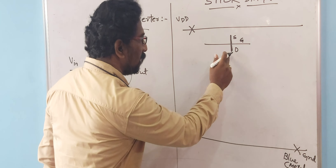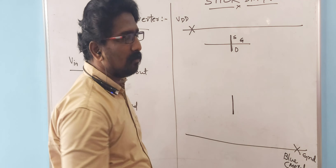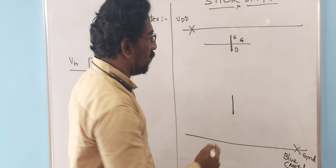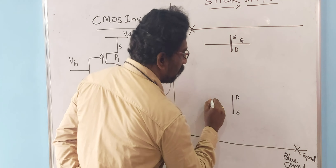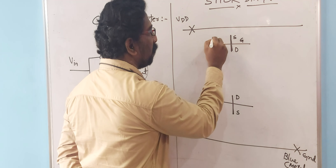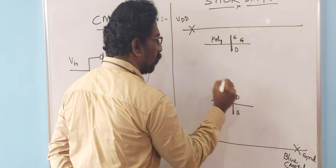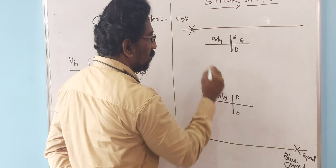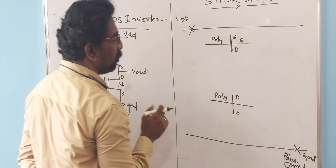Exactly below the PMOS, draw one N diffusion in the same stick fashion. The color of the N diffusion will be green. The top part acts as the drain and the bottom as the source. Draw one vertical line between the terminals using polysilicon — we call it poly — which is red in color. This structure acts as an NMOS device.